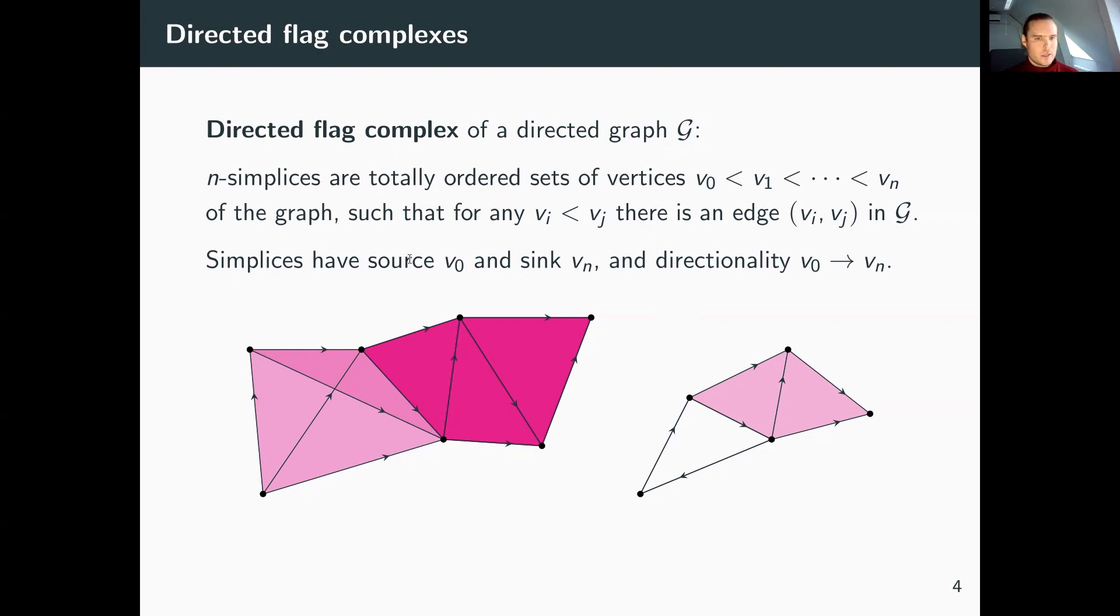We can think of the simplices as directed cliques of the graph. For example, on the left we have a four-clique with four vertices that gives us a three-simplex, because the orientation of the directed edges satisfies the simplex condition. One thing to note is that oriented cycles, like shown here, will never give us a simplex because they can never satisfy this ordering condition.